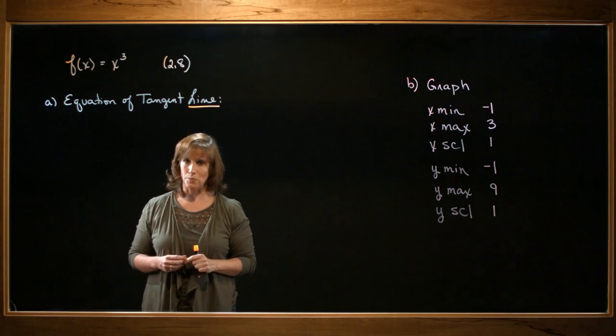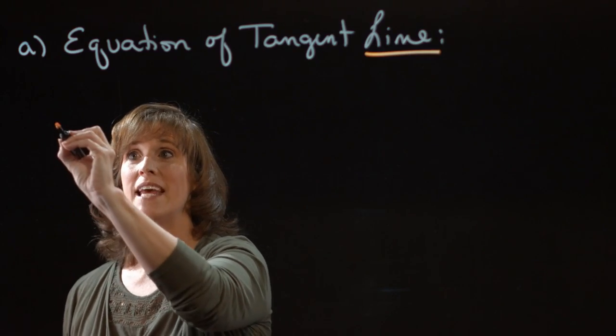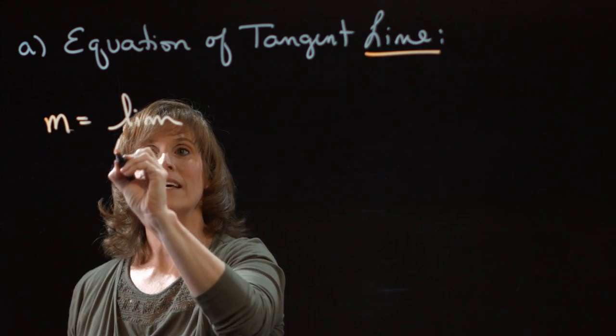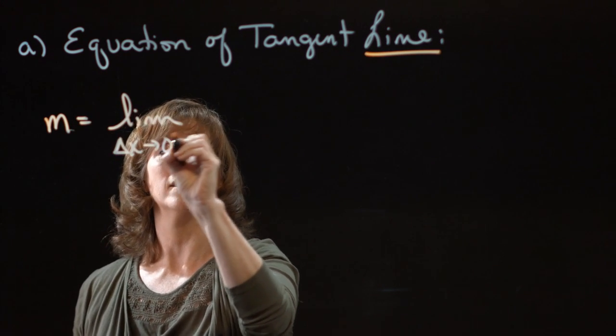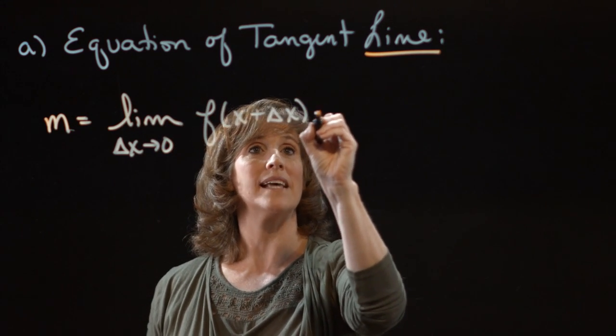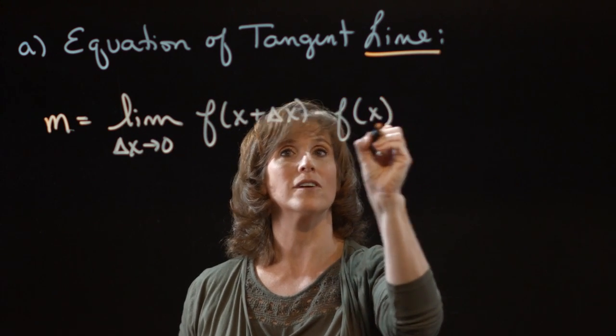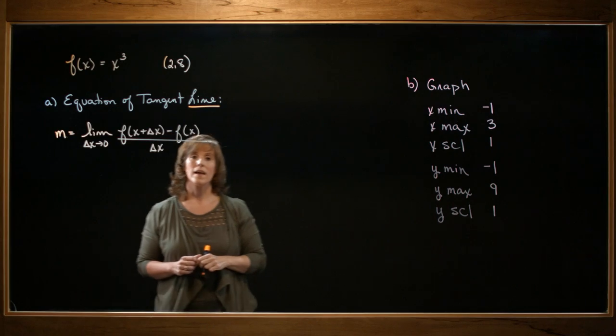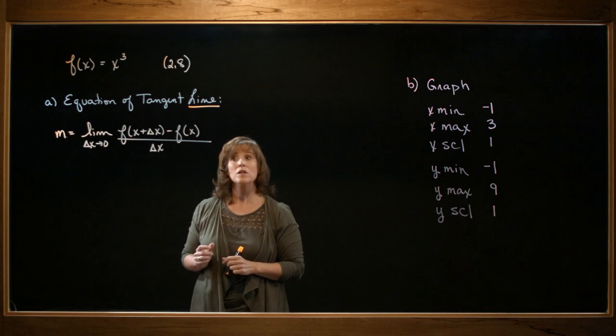But we need to find the slope. We know the slope of a tangent line is defined as the limit as delta x approaches 0 of f of x plus delta x minus f of x all over delta x. Now, to evaluate this limit, there are really four parts.